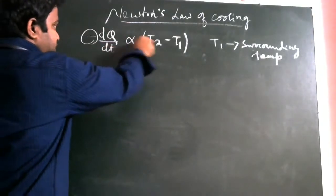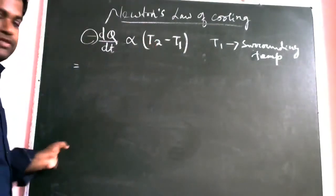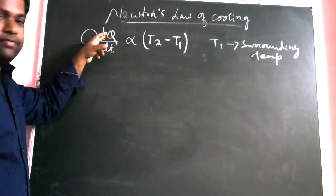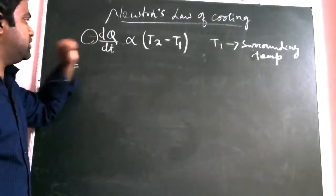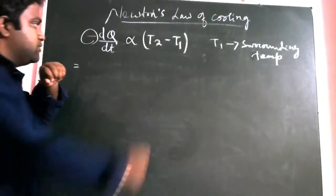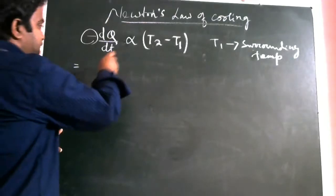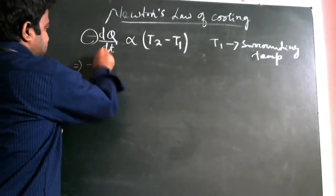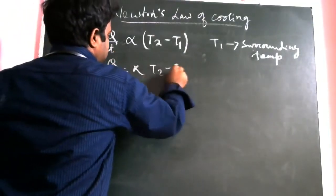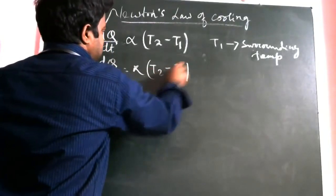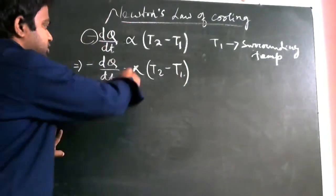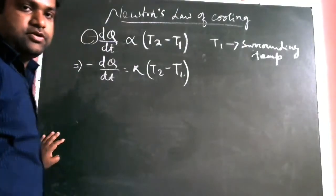Note that the t in dQ/dt and the T in the temperature are different — this T represents temperature, but the t in the denominator represents time. Q represents heat, indicating how fast the object is cooling down. So I can write: minus dQ by dt equals k times (T2 minus T1), where k is the proportionality constant.